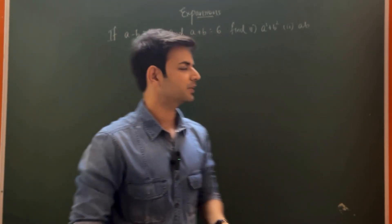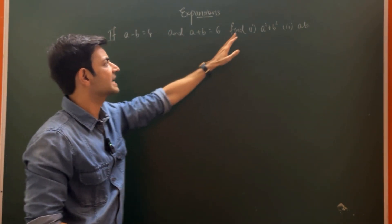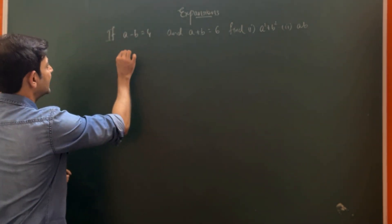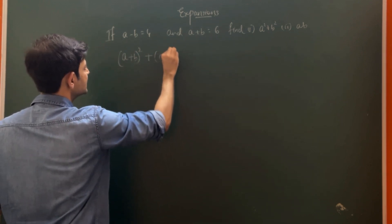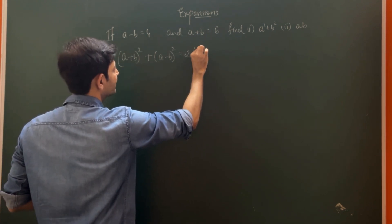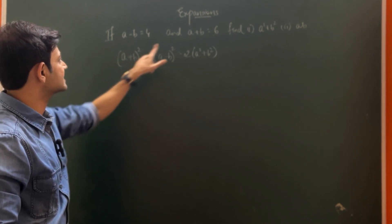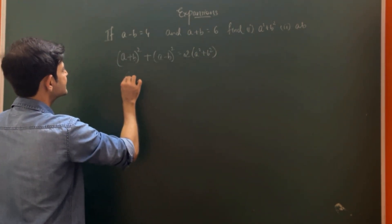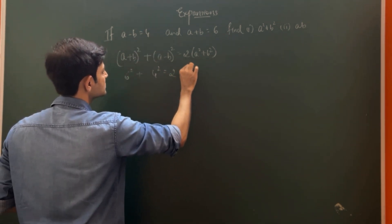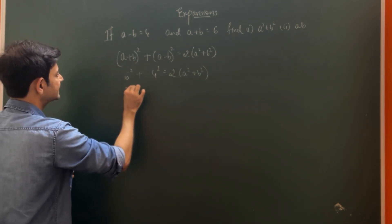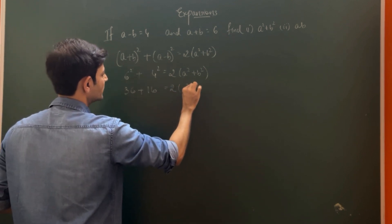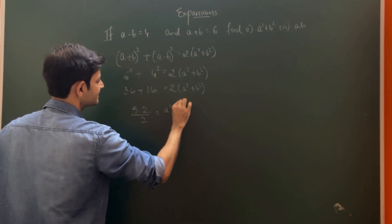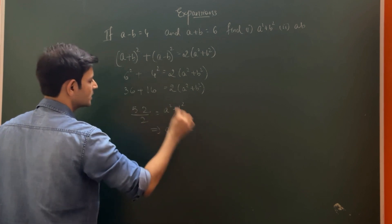Let's take a question: if a - b = 4 and a + b = 6, find the value of a² + b² and ab. To find a² + b², we use the formula (a + b)² + (a - b)² = 2(a² + b²). Substituting: 6² + 4² = 36 + 16 = 52, so a² + b² = 52/2 = 26.